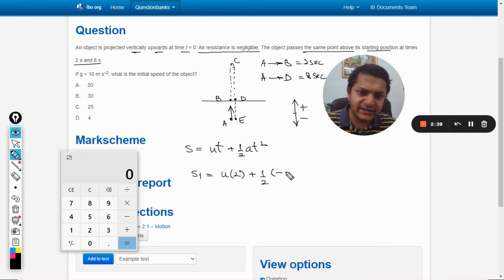ut plus half, gravity will be taken as negative and it is written that g will be taken as 10, so I have taken minus 10, negative because now it is in the downward direction, and the time is 2. So this is S1.